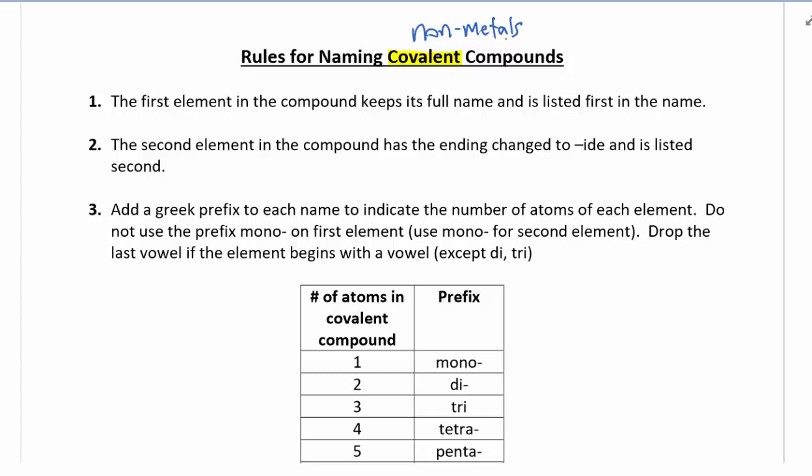Now there's only one exception when you don't add a prefix, and that's you do not add a prefix if mono is the first element. So we would add mono if it's the second element. It's only if it's the first element that you don't add mono.